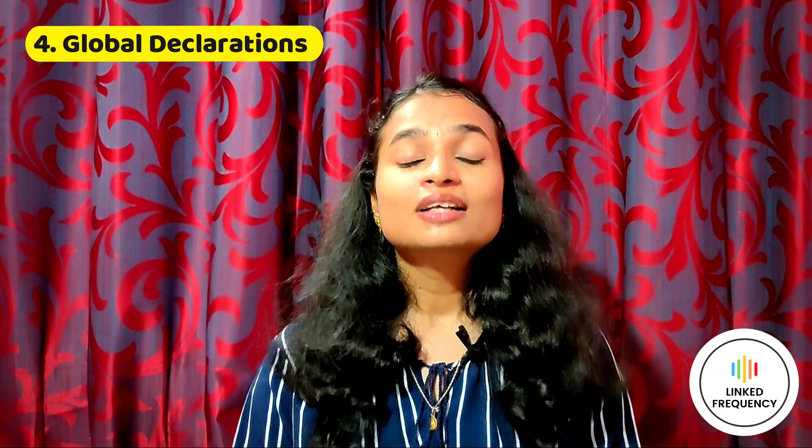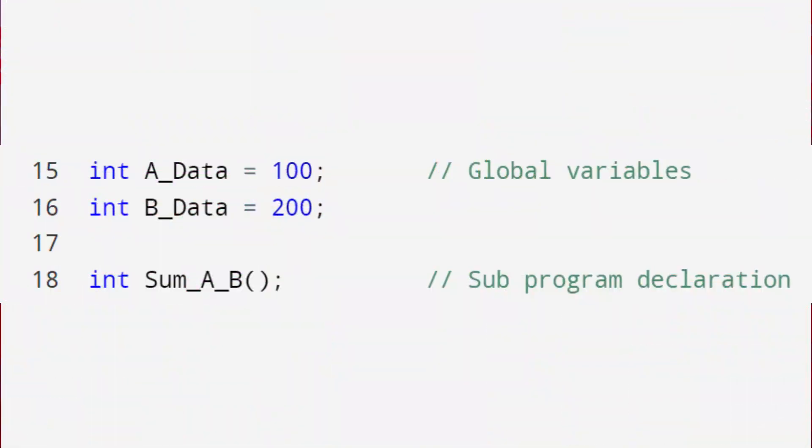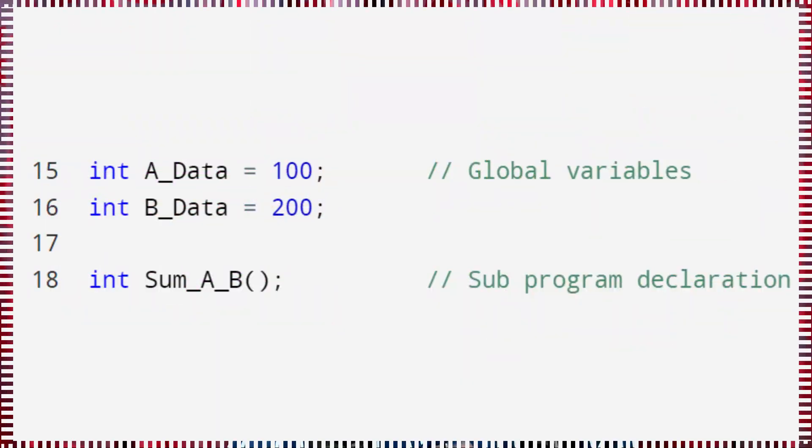Global declarations. There are some variables which are used more than once in multiple functions — these are called global variables. This section is used to define these global variables. Additionally, user-defined functions are declared here.